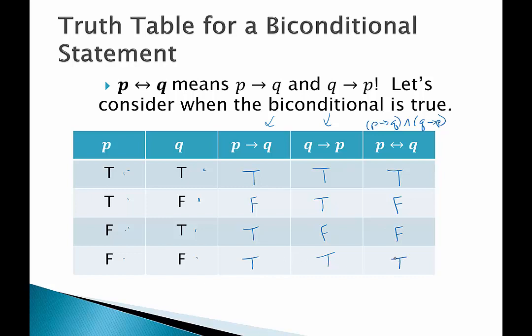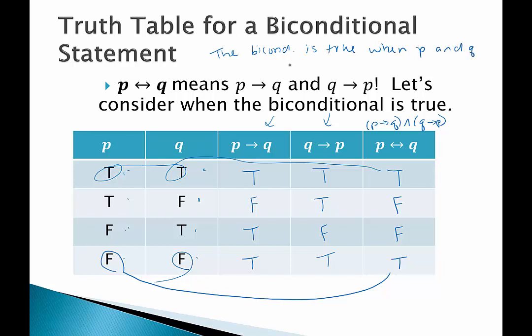So when is a biconditional statement true? Going back to the original two statements, it's true when they're both false or when they're both true. So they have to have the same truth value, P and Q have to have the same truth value in order for the biconditional statement to be true. And that's really important to know. You might want to write that down. So the biconditional is true when P and Q have the same truth value.